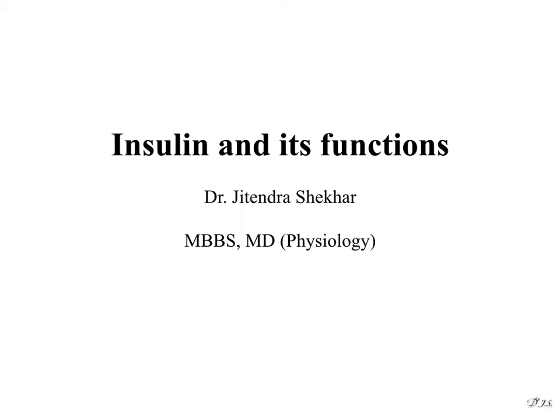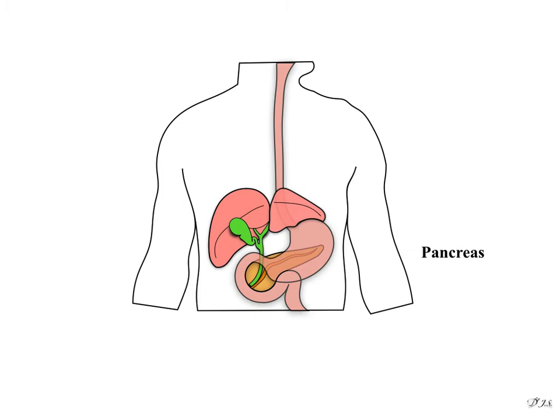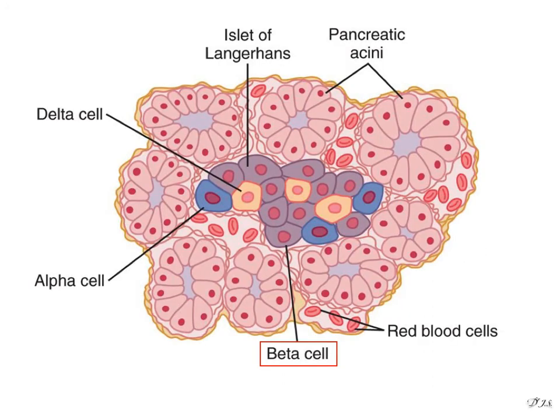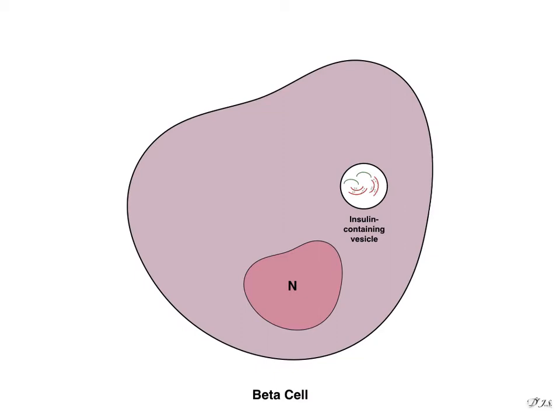Hello viewers, this video is about insulin and its functions. On cut section, the pancreas contains the beta cells. Beta cells synthesize insulin by protein synthesis.